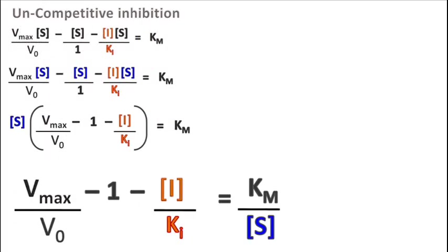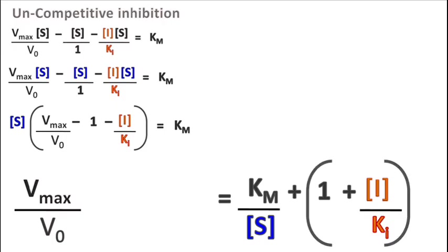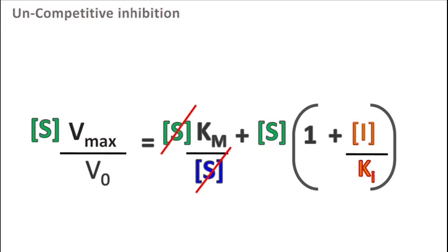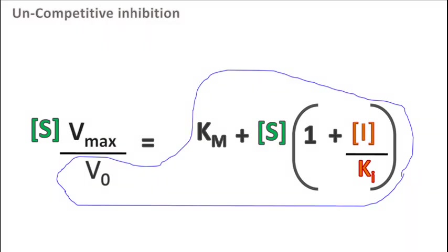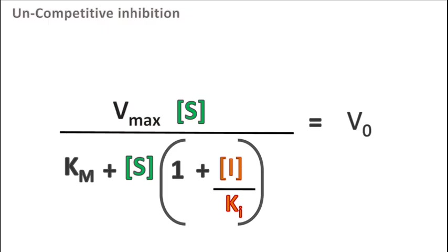Taking negative terms on the right-hand side, we get Vmax upon V0 is equal to Km upon S plus 1 plus I upon Ki. And finally, we get V0 is equal to Vmax into S upon Km plus S into (1 plus I upon Ki).